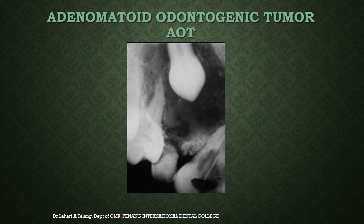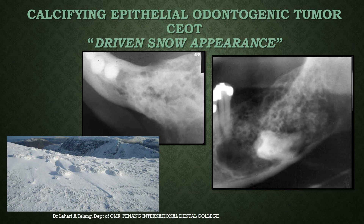The adenomatoid odontogenic tumor (AOT) classically involves the maxillary canine region. On the radiograph, you would see radiolucency surrounding the canine with multiple small, tiny radio-opaque flecks within the well-defined radiolucent area. The calcifying epithelial odontogenic tumor (CEOT) has the appearance called 'driven snow' — a mixed radio-opaque and radiolucent appearance, not clearly demarcated. It generally involves the posterior mandible and appears more ill-defined than a true multilocular radiolucency, which is why it is described as driven snow.